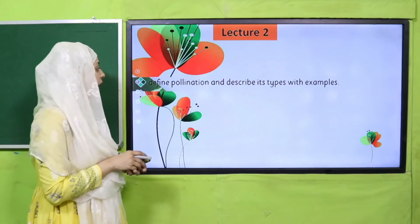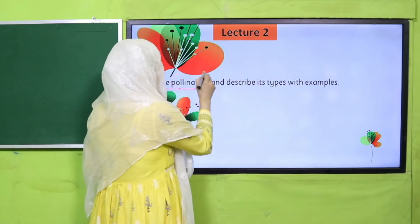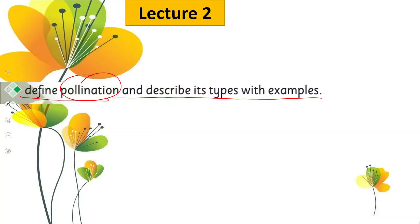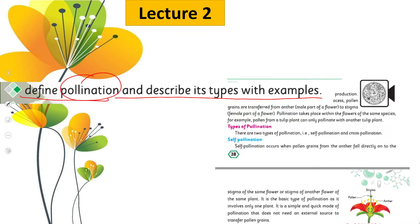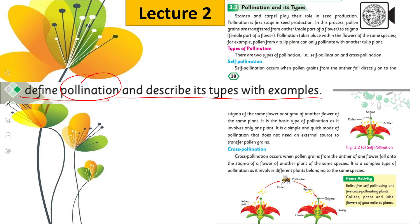In lecture number two, the students will be able to define pollination and describe its types with examples. Pollination kya hoti hai, aap uski definition dekhenge and explain it with examples. Different types of pollination hum discuss kareenge. The reading pages are 38 and 39, which are included in lecture number two.